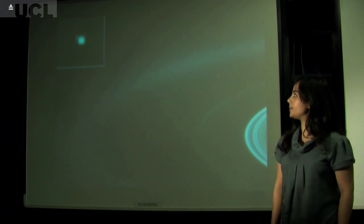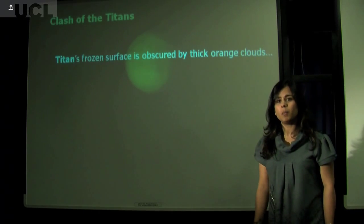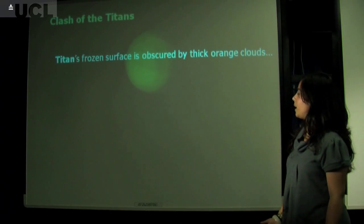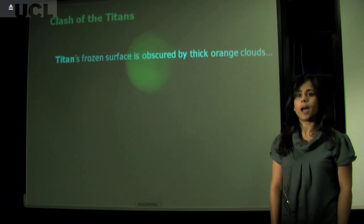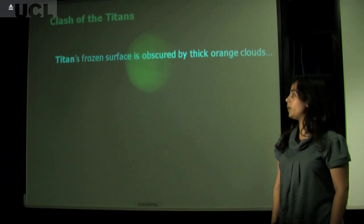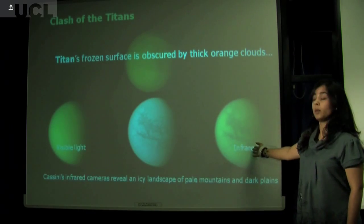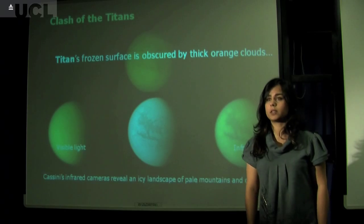Let's look at the moons now. Titan, Saturn's biggest moon, is bigger than Mercury, bigger than the planet Mercury, and it's got its own atmosphere. It's obscured in these thick orange clouds, but if we look at it in different instruments, visible light and infrared, we can actually learn a lot more about Titan itself.